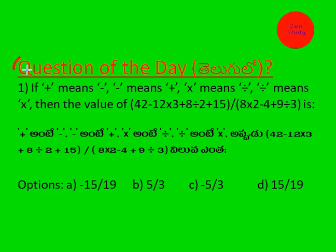Question of the day: If '+' means '÷', '÷' means '+', 'x' means '÷', '÷' means 'x', then the value of (42-12x3+8÷2+15)/(8x2-4+9÷3) is. Plus and minus, minus and plus, into and divided by, divided by into 42 minus 12 into 3 plus 8 divides 2 plus 15 divided by 18 into 2 minus 4 plus 9 divides 3.